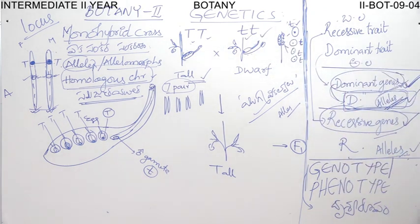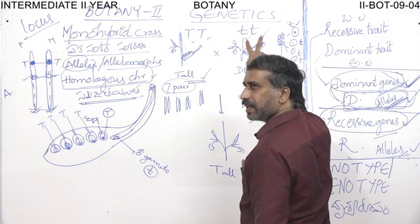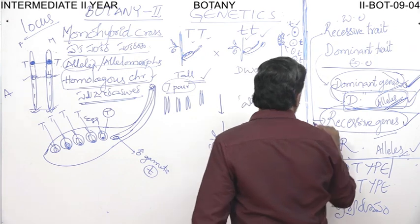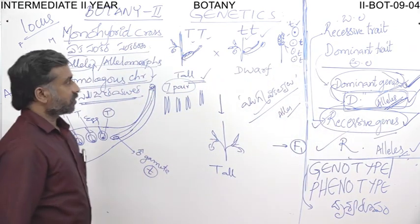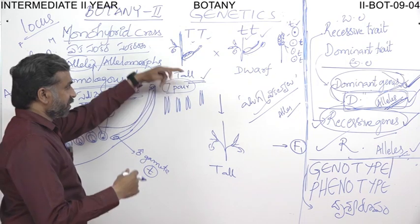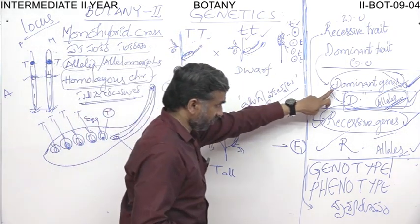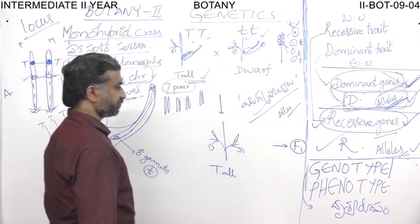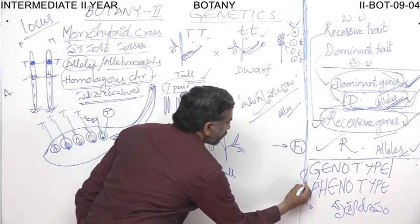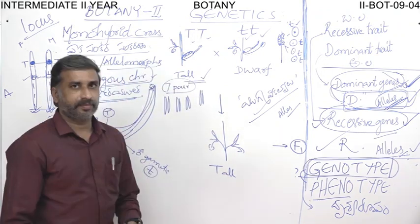So dominant character is represented by dominant genes, which we should correctly call dominant alleles. Similarly, recessive alleles represent the recessive character. Now we know these two terms as well.